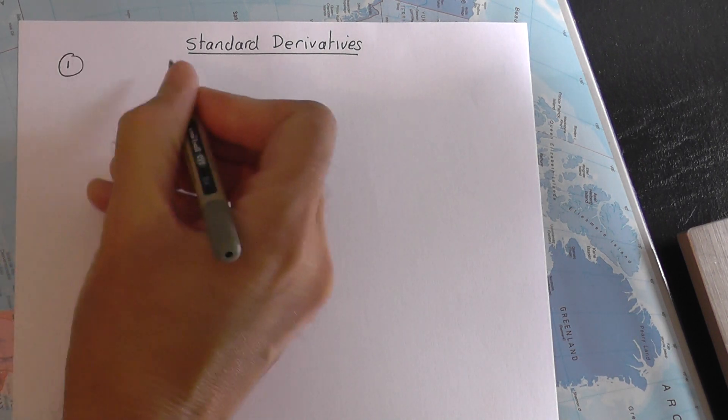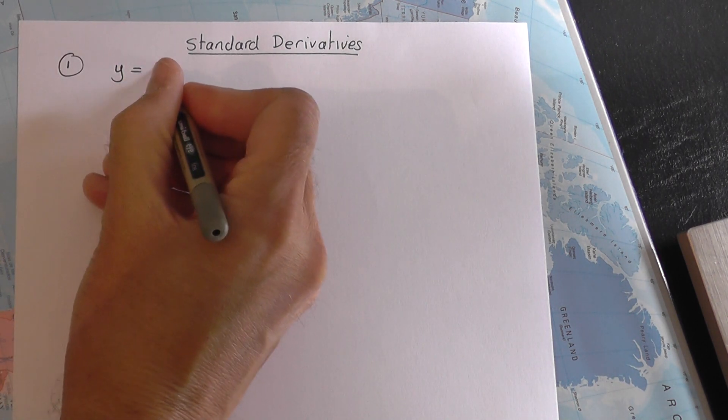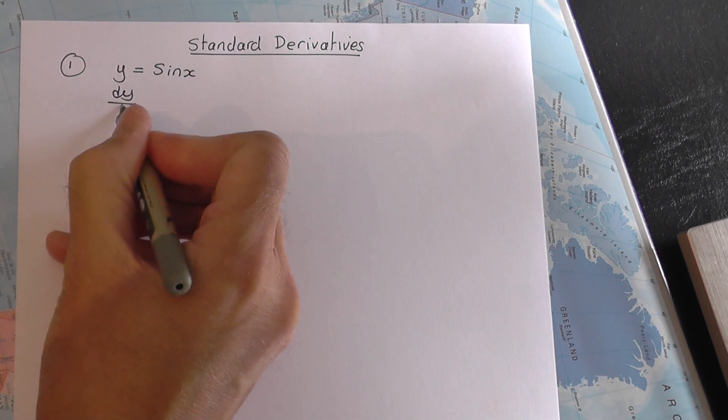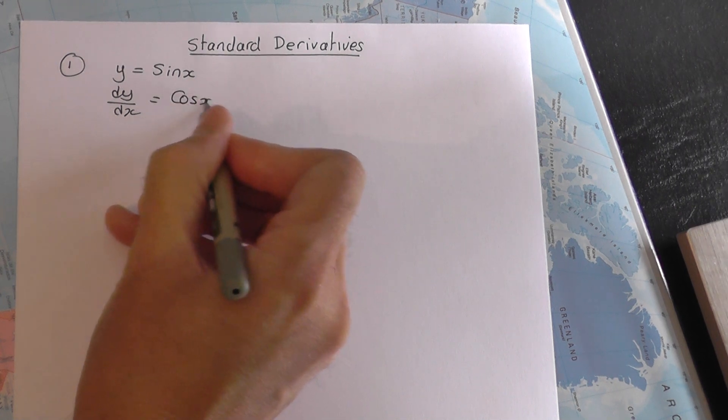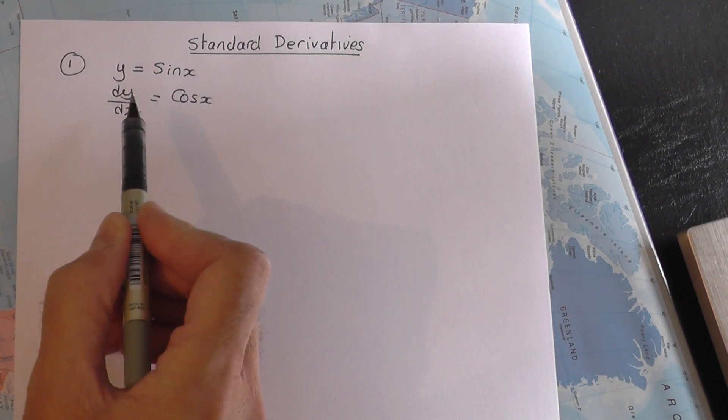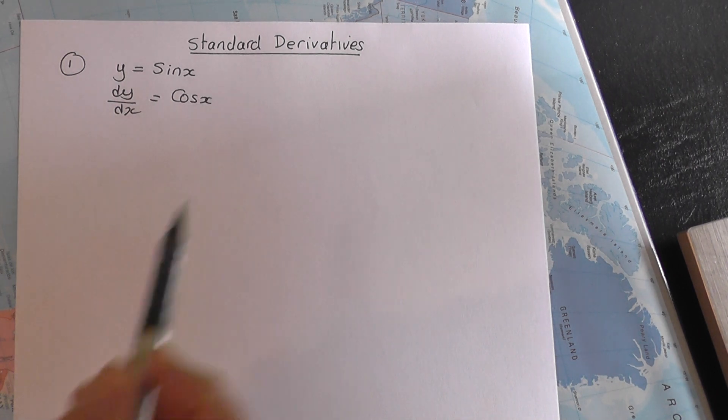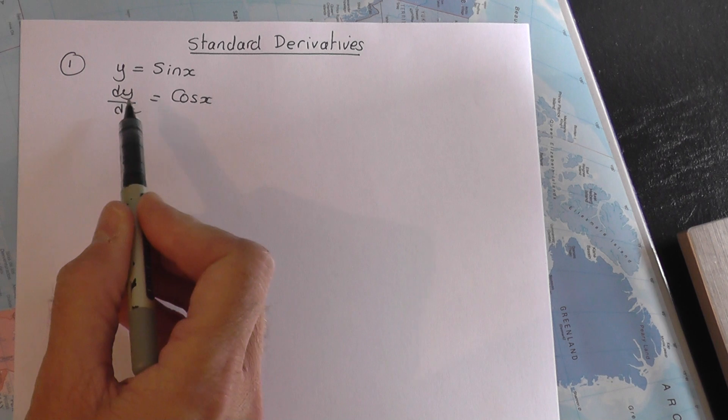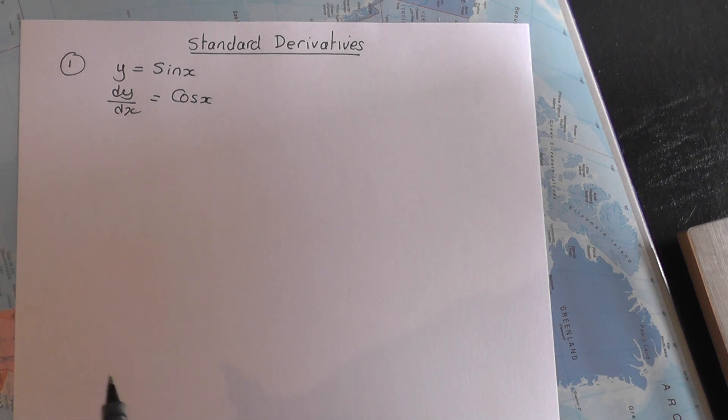The first one, which I mentioned in a previous video, is y equals sine x. And dy by dx, the gradient function, will be equal to cos x. Now 9 times out of 10, in fact 99 times out of 100, you are just allowed to quote this. That result can be proven by first principles, and for your year 13 exam you do need to be able to do that. But in this little video, all I'm selling you is learn y equals sine x, dy by dx is cos x. It's a standard derivative result.